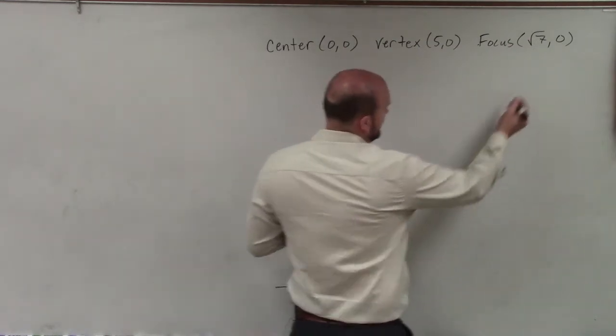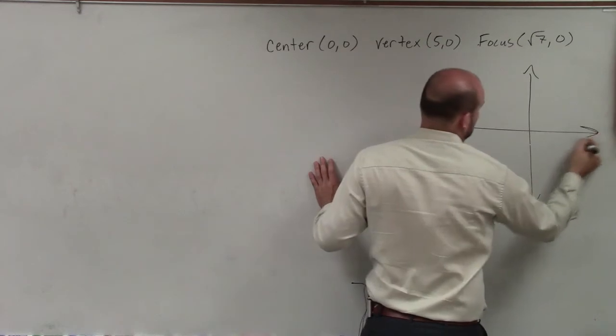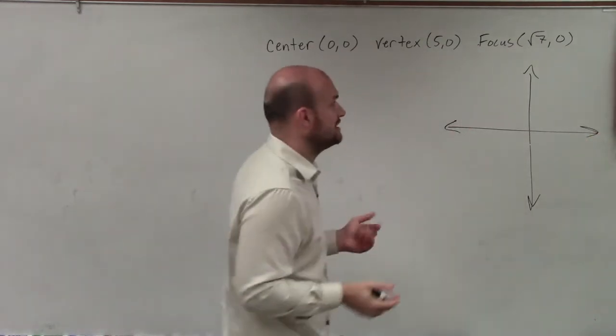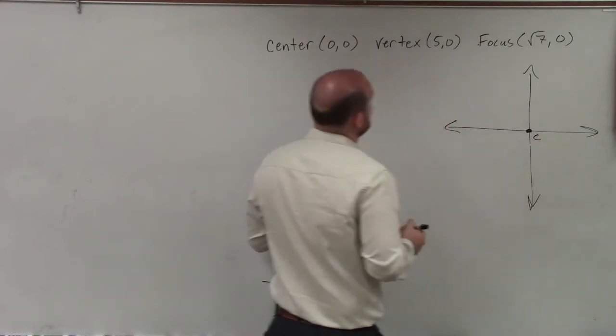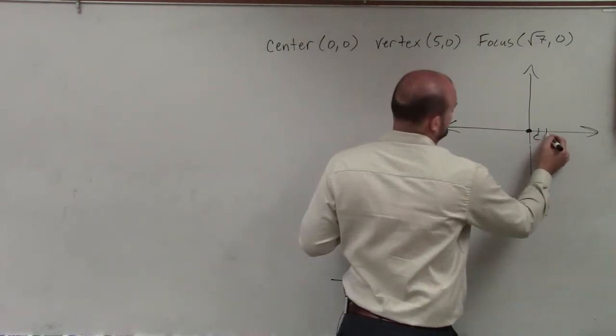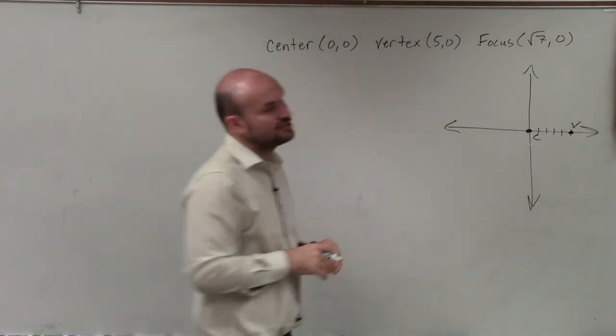So to understand that or to identify where my major axis is going to be located, I'm going to plot the information I have. So the center is at 0, 0. My vertex is at 5, 0. 1, 2, 3, 4, 5. And my focus is at square root of 7, 0.